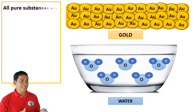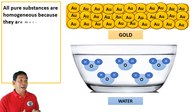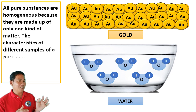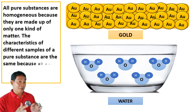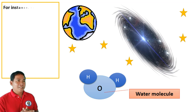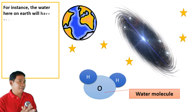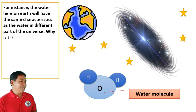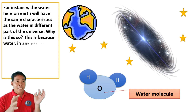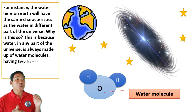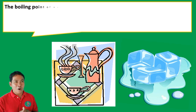All pure substances are homogeneous because they are made up of only one kind of matter. The characteristics of different samples of a pure substance are the same because all pure substances have a definite composition. For instance, water on Earth will have the same characteristics as water in different parts of the universe — because water is always made up of water molecules having two hydrogen atoms and one oxygen atom.